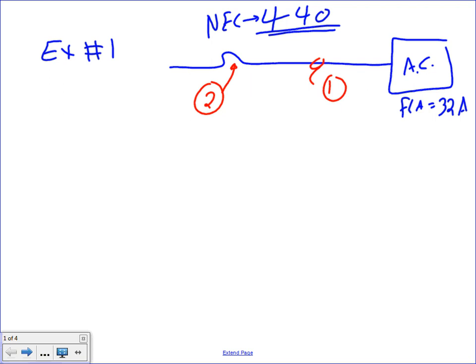So I have an AC. The full load amp of the AC is 32. I need to find the conductor and overcurrent protection device. You guys are designers.